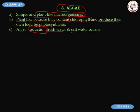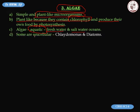Most of the algae are aquatic, meaning they live in water — either fresh water or sea water, the oceans. They also live in marshy land. Therefore most of the algae are aquatic in nature. Some of the algae are unicellular, meaning they are made up of one cell.